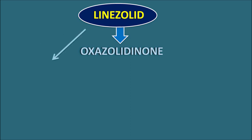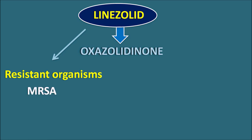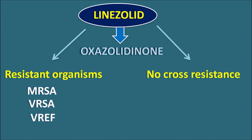The first advantage is that Linezolid is useful in the treatment of resistant organisms. For example, Staphylococcus aureus can develop resistance towards methicillin, forming MRSA (methicillin-resistant Staphylococcus aureus), similarly VRSA (vancomycin-resistant Staphylococcus aureus), and VREF (vancomycin-resistant Enterococcus faecium). Linezolid is active against all such resistant organisms.